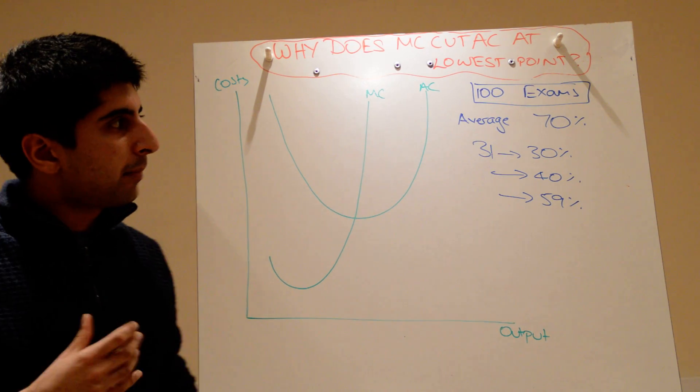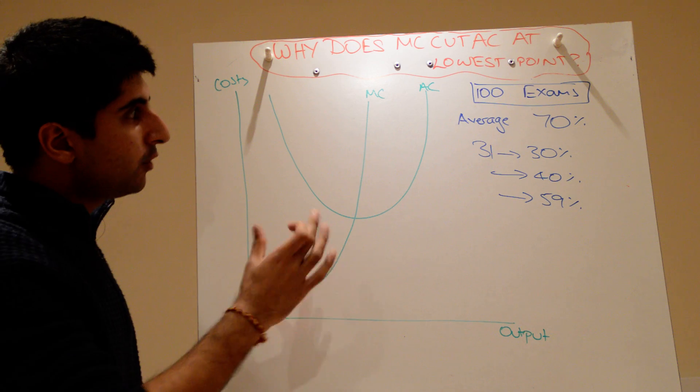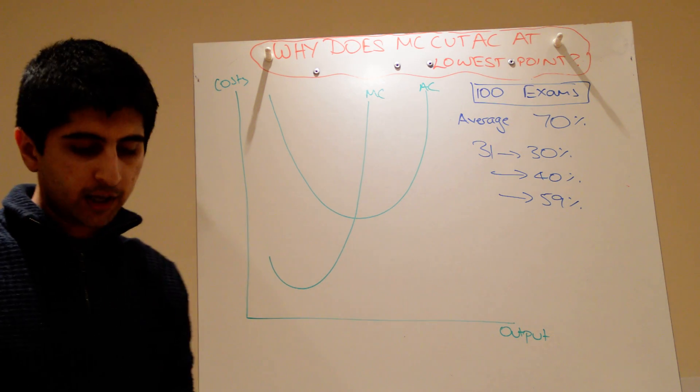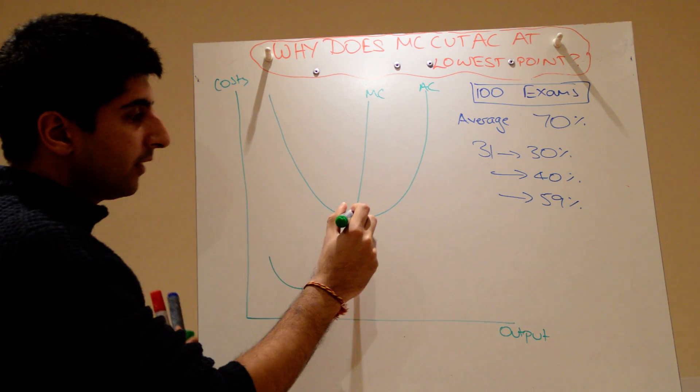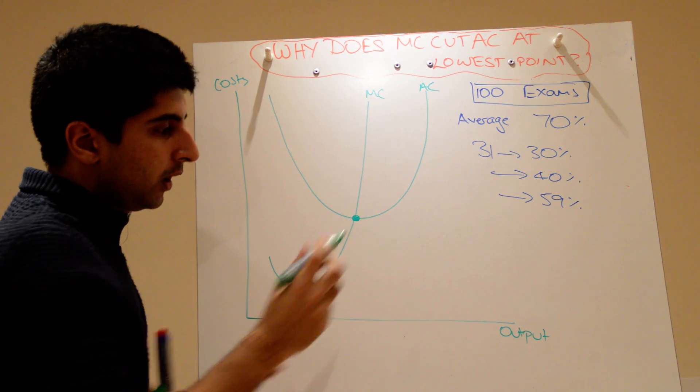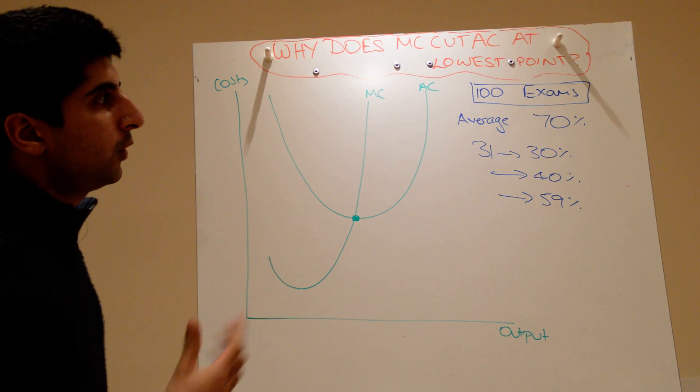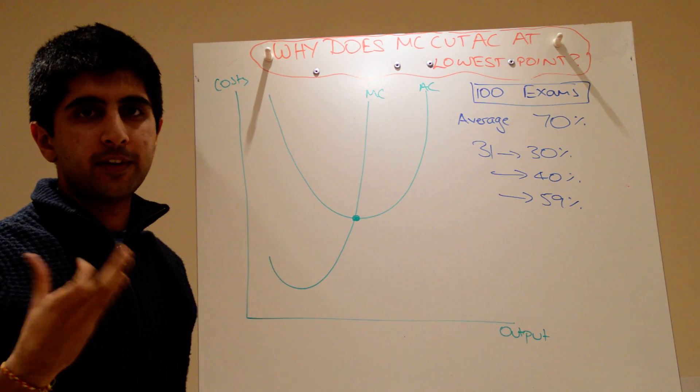A concept that baffles a lot of students is why we draw the marginal cost curve to cut the average cost curve at its lowest point here. Why does that actually occur? Well, to explain, I'm going to use the concept of exam results.